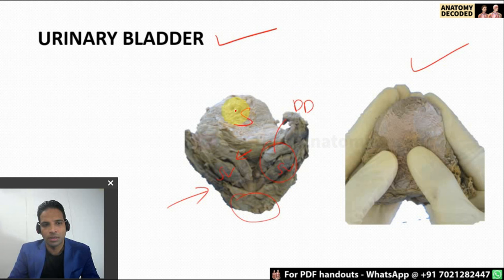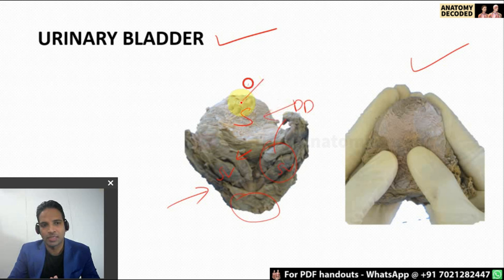On the superior surface, the urinary bladder is covered by peritoneum in an empty state. When the urinary bladder fills up, the peritoneum is reflected on the superior surface such that it comes to lie in contact with the anterior abdominal wall. If there is urinary retention, urine can be drained through a procedure called suprapubic cystotomy.